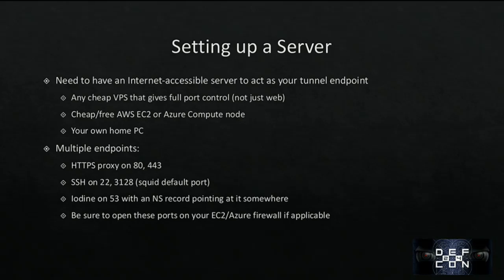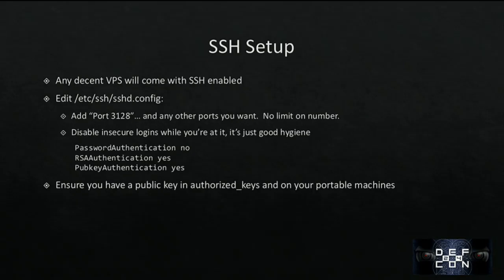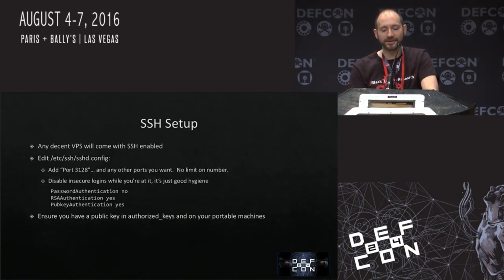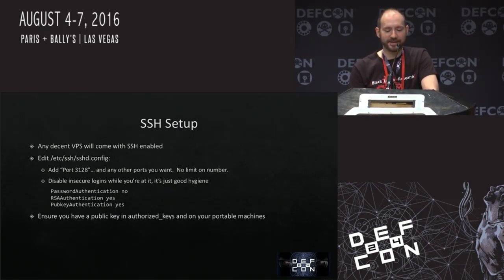We need to set up a server — any internet-accessible server, any cheap VPS that lets you control all ports will work. You can't use a shared web host account since you usually only get ports 80 and 443. You could use your own home PC, but I don't think that's a great idea. You can get a cheap or free AWS or Azure node and just let Amazon or Microsoft provide your endpoint. Endpoints you want to set up: an HTTPS proxy, SSH, and Iodine, which we'll talk more about. Be sure you open the ports you set up on your server's firewall. Any decent VPS will come with SSH enabled, so go ahead and add port 3128 as well as any other ports you think might be useful. While you're at it, disable insecure logons on SSH — just because you should do that anyway — and ensure you have a public key available so you're not doing password login.